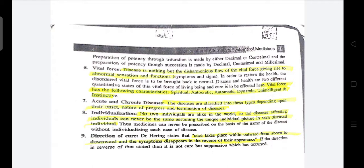Next, individualization: no two individuals are alike in the world, so the diseases affecting individuals can never be the same, assuming a unique individual picture in each diseased individual. If one person is cured by something we cannot increase that dose and assume another person will be cured by it, because every individual body is different and every person's suffering and response is different. Next, direction of cure: cure takes place from above to downward, and the symptoms disappear in the reverse of their appearance — as symptoms appeared, they will reverse in the same order. That is the direction of cure — from healthy to disease, the symptoms appear; this is the basic symptom cure.